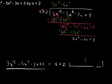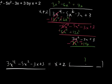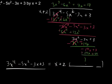Continuing the iteration: x will go into 7x squared exactly 7x times, which gives me 7x squared plus 14x. I subtract again — my 7x squareds cancel and I end up with negative 17x plus 3. Negative 17 is my final piece; that's going to give me negative 17x minus 34. When I subtract, my 17x's cancel and I'm left with a remainder of 37.